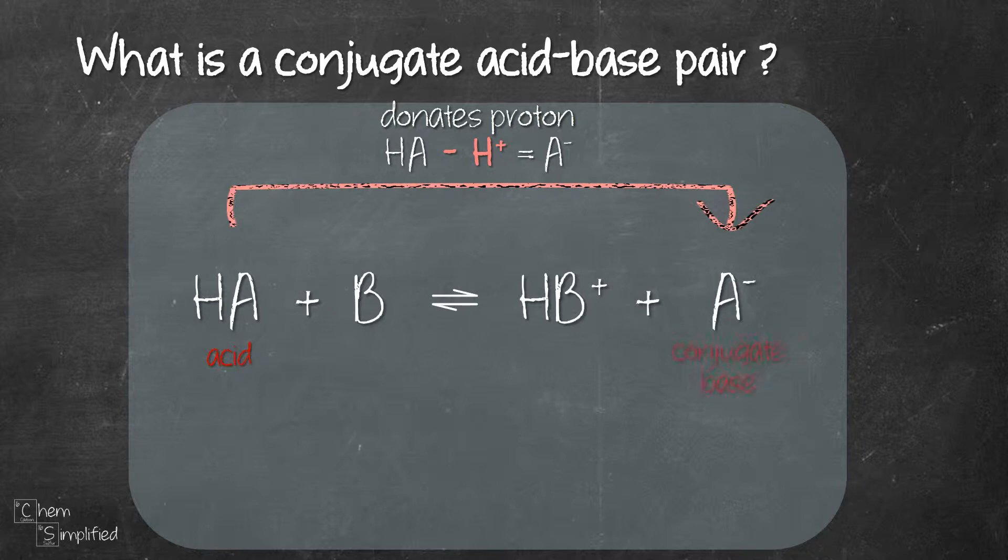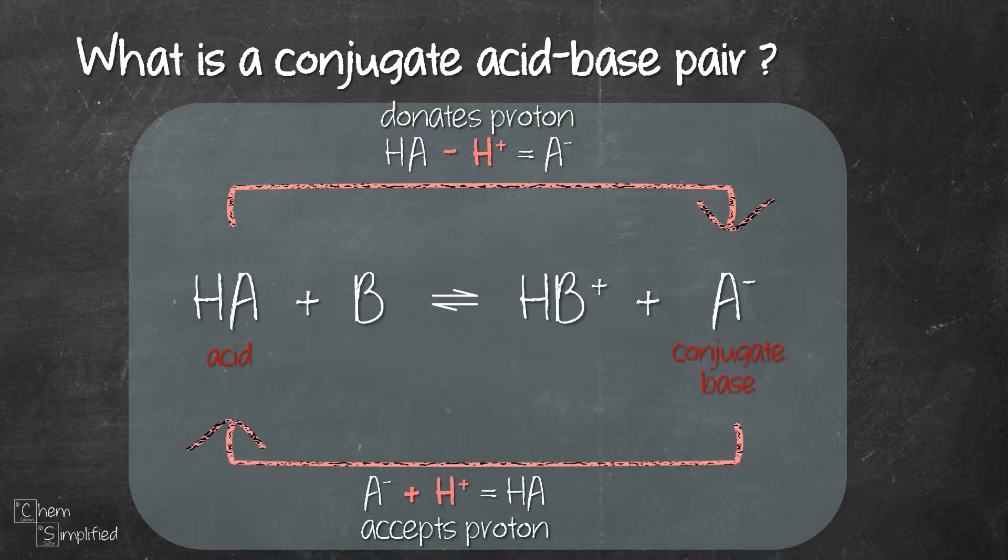A- is called a conjugate base because in the reverse reaction, it can accept a proton to form back HA. Accepting a proton makes it a base and since it's related to HA, we call it a conjugate base for HA.